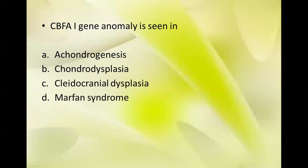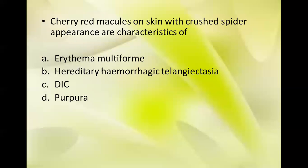Next question: CBFA1 gene anomaly is seen in which condition? Options: achondrogenesis, chondrodysplasia, cleidocranial dysplasia, and Marfan syndrome. The correct answer is C, cleidocranial dysplasia.